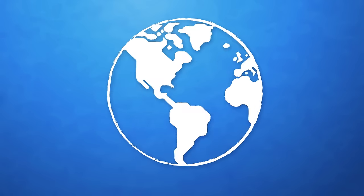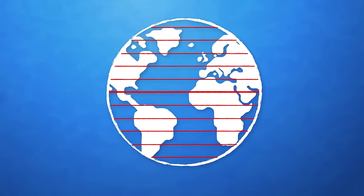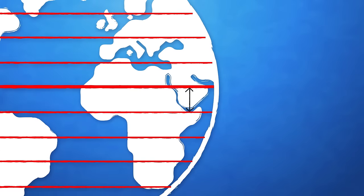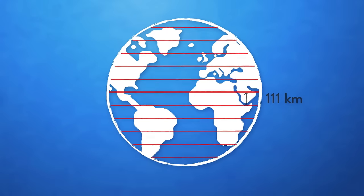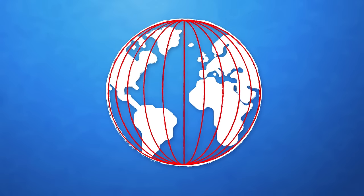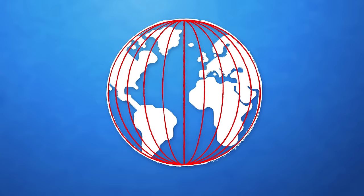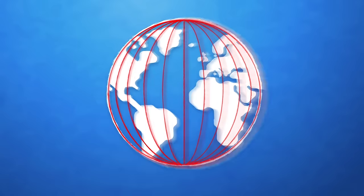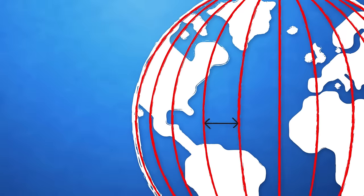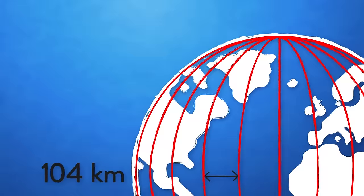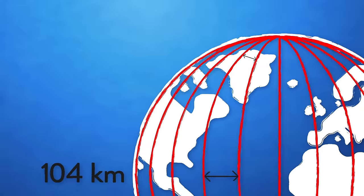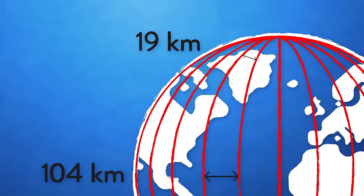Since the lines of latitude are parallel, each degree covers about the same distance the world over, roughly 111 kilometers. But because meridians converge at the poles, the distance covered in each degree of longitude varies hugely depending on your latitude. At 20 degrees north, which is about the latitude of Cuba and Hawaii, one degree of longitude is approximately 104 kilometers. At 80 degrees north, the latitude of Svalbard and northern Greenland, it's only about 19 kilometers.